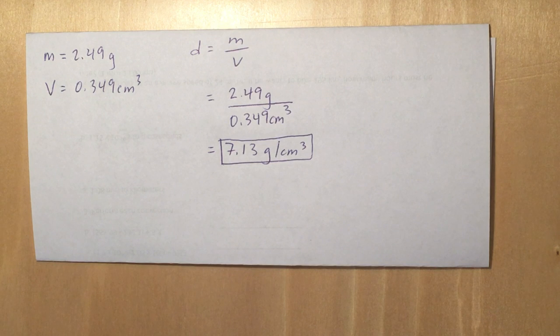So remember your significant digits - both of the numbers given have three sig figs, so you don't want to put all that other stuff after the three that your calculator gives you. So the answer is 7.13 grams per cubic centimeter.